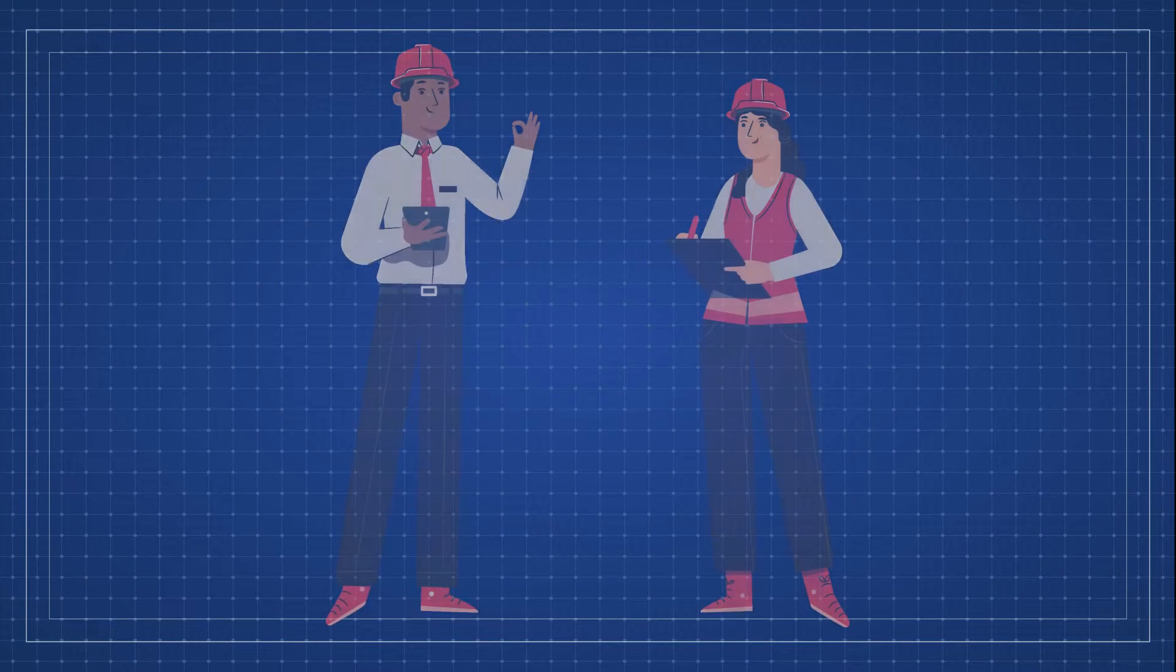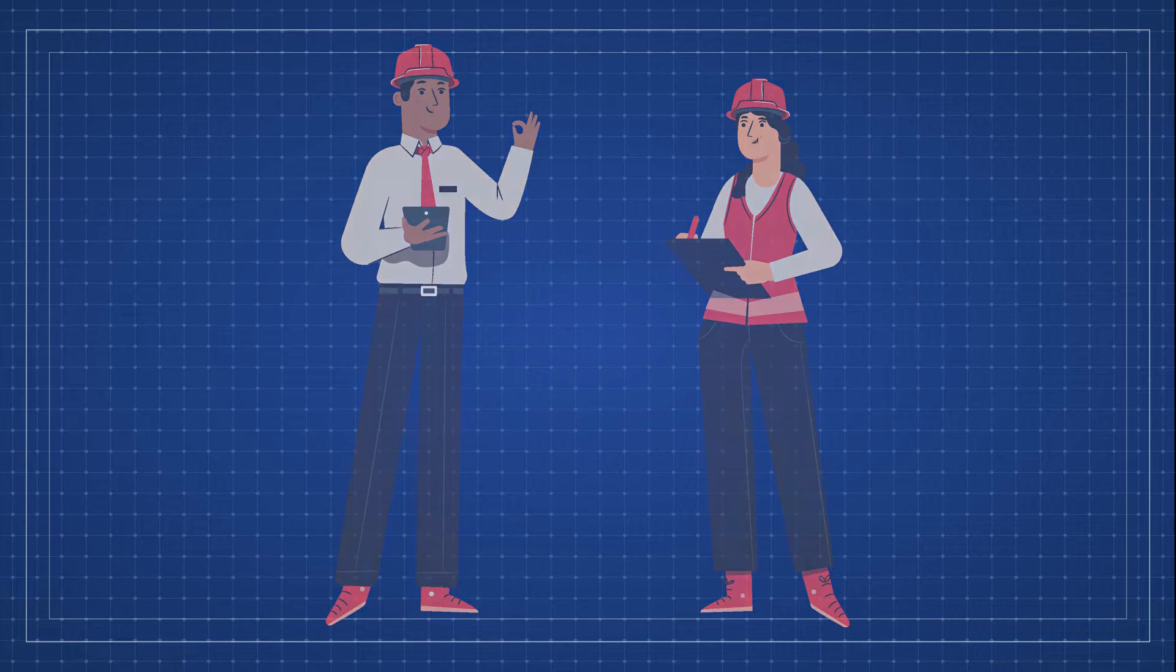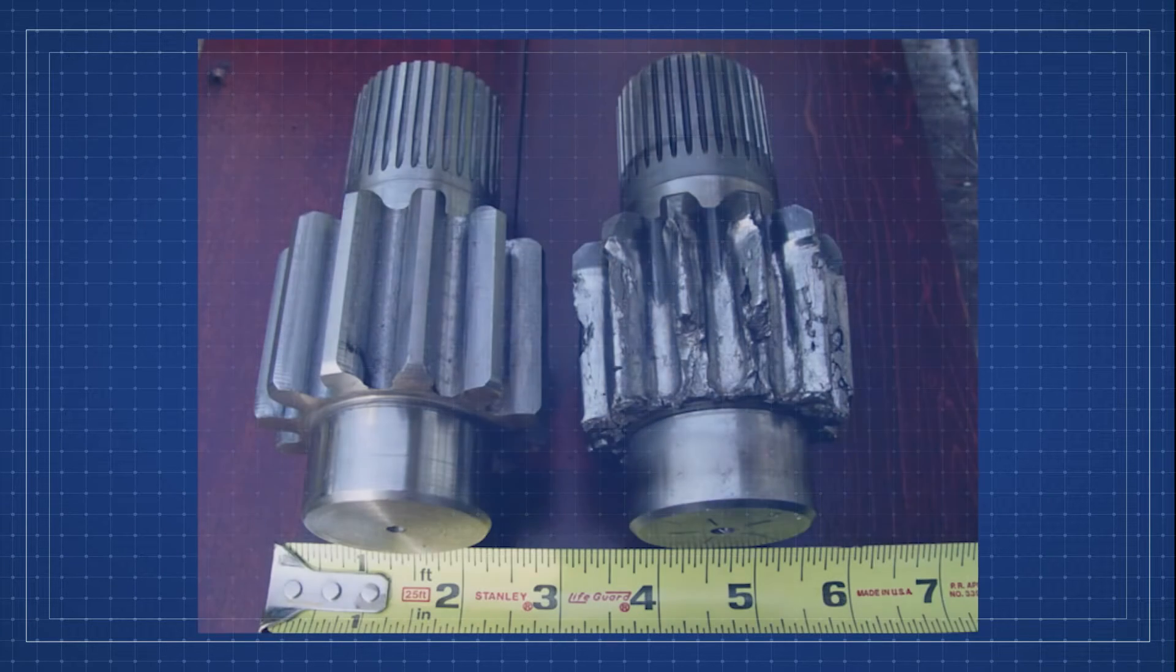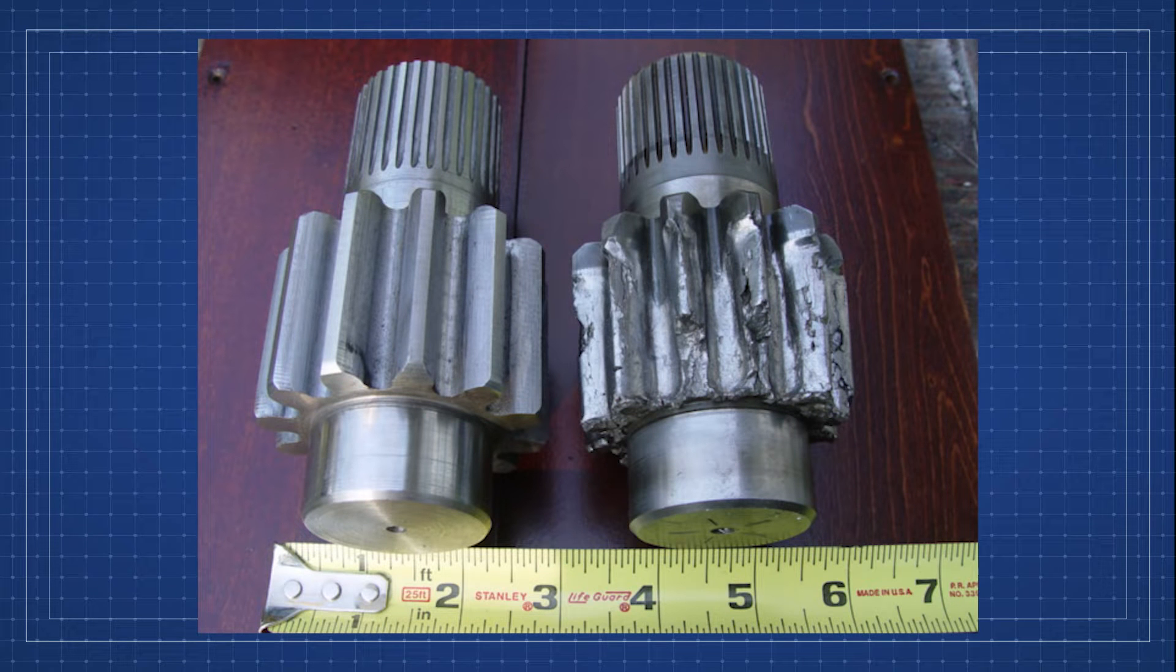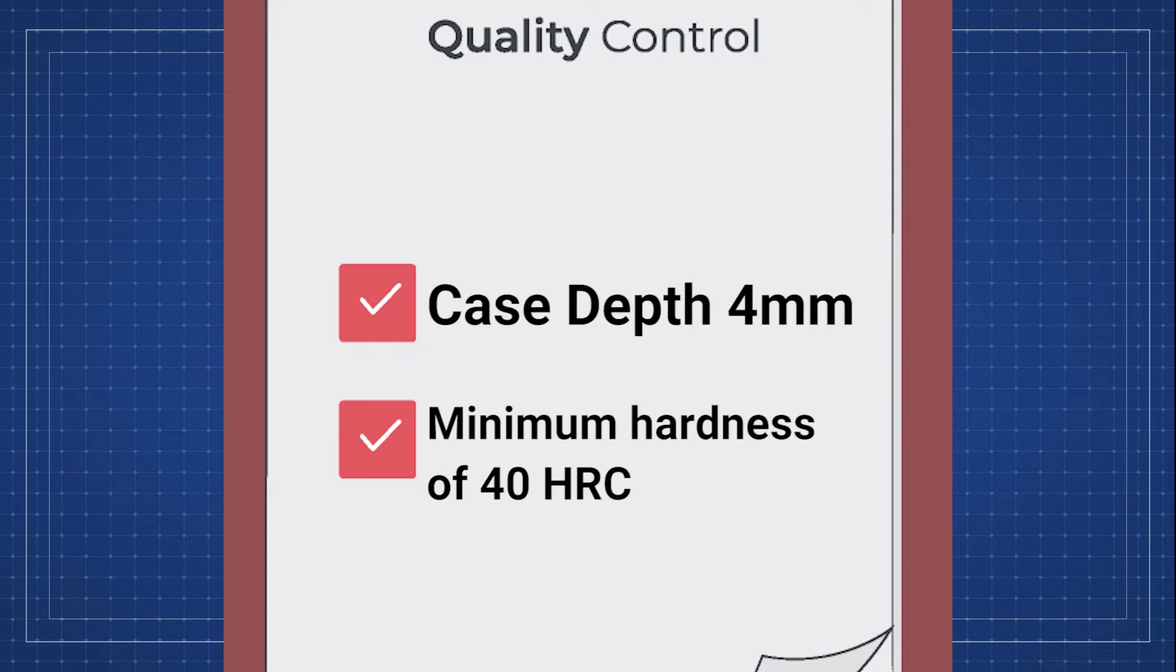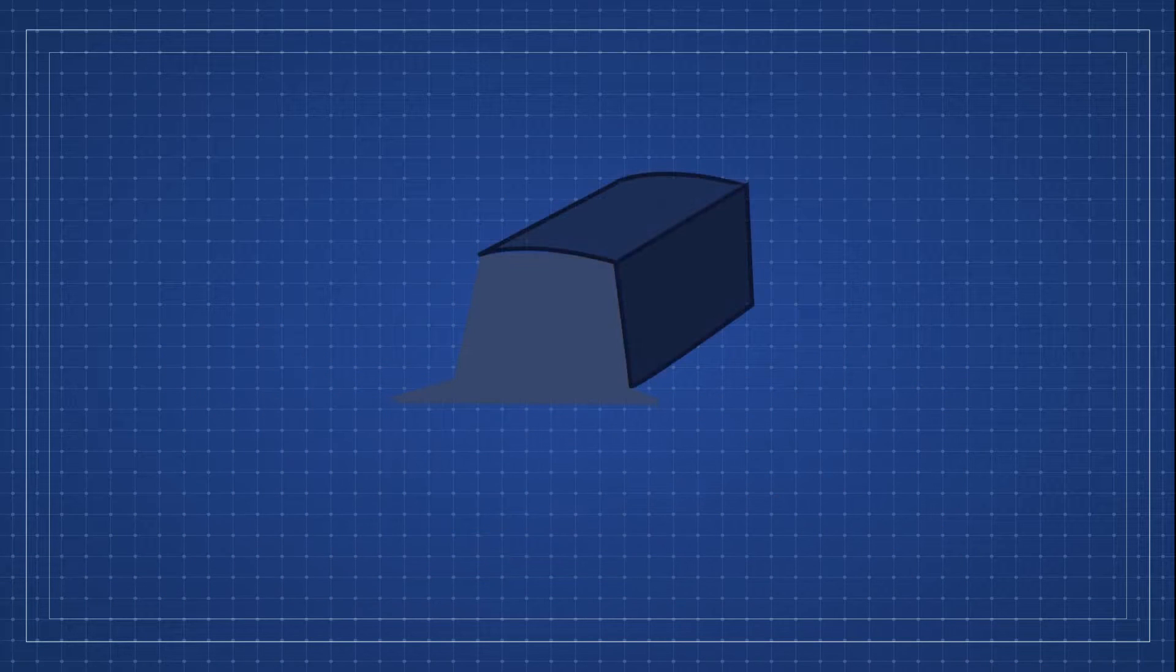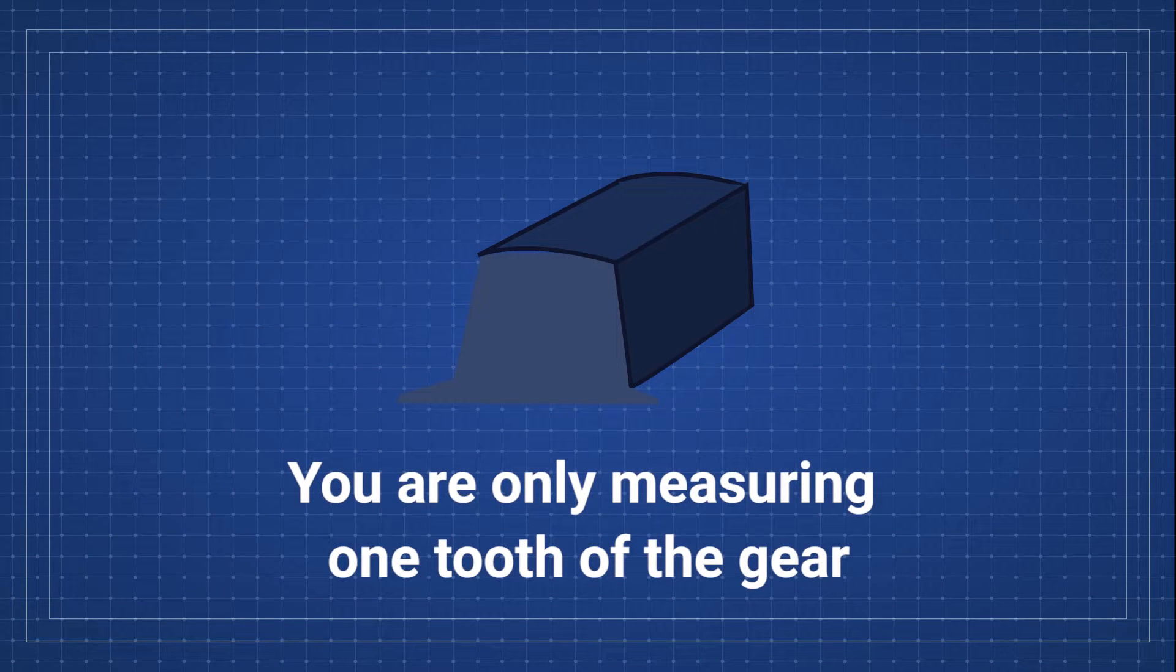For this lab, imagine that you're a field engineer working in the field. Your company has experienced field failures with a heat-treated drivetrain component. The design engineers specified a case depth of 4mm with a minimum hardness of 40 HRC. You are given a mounted sample of the component and you must determine if this part meets the specifications and you should provide evidence along with it.